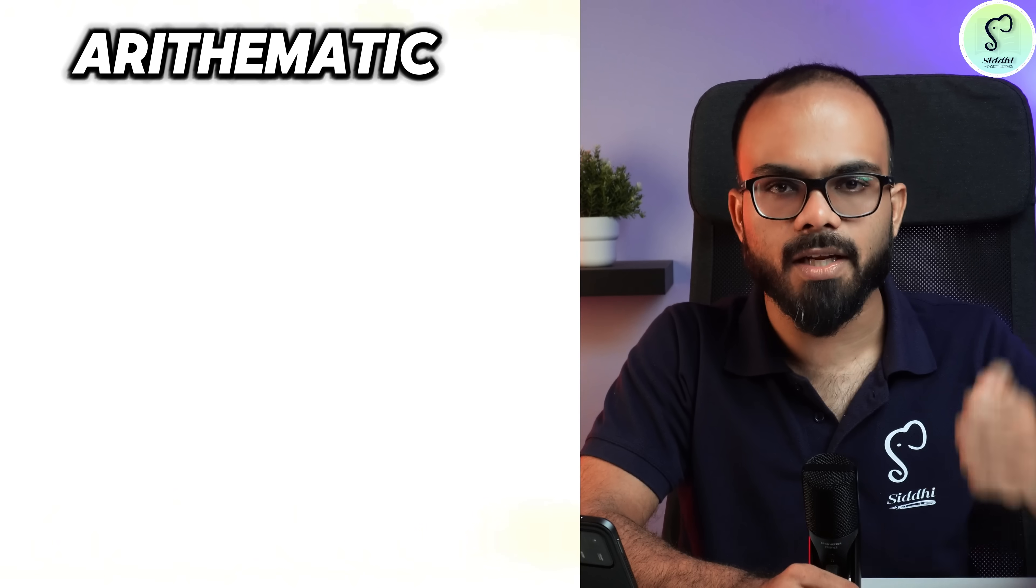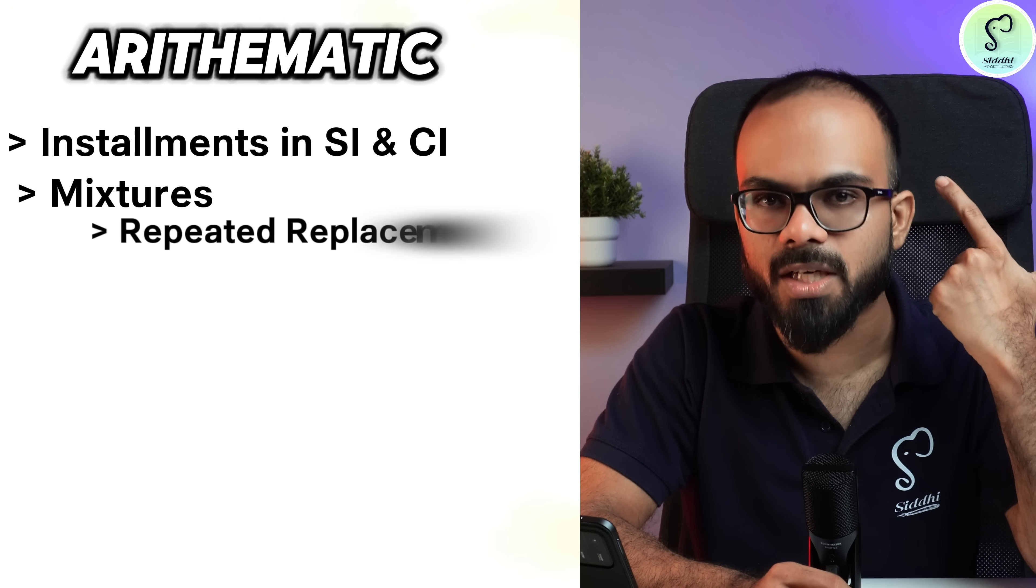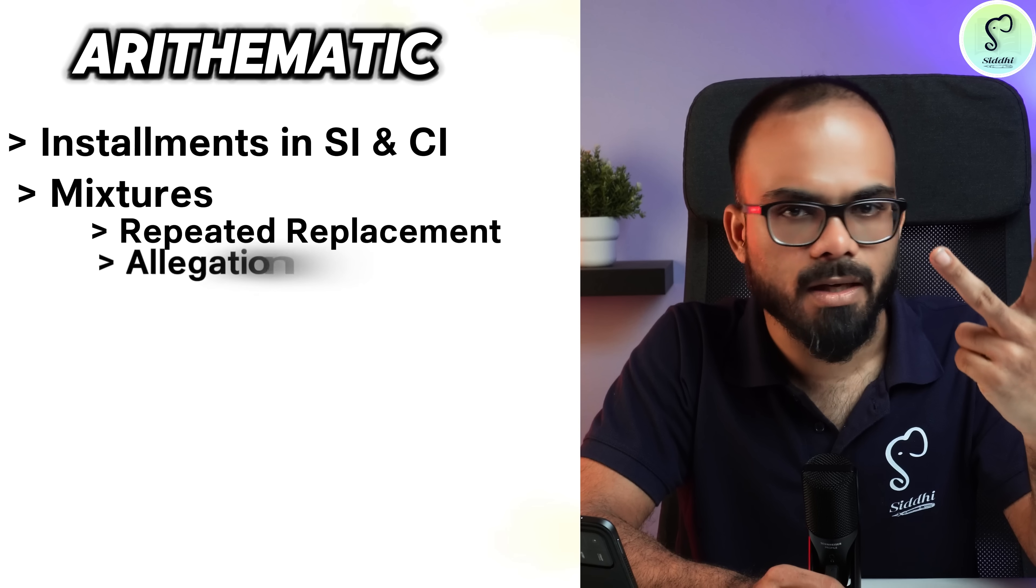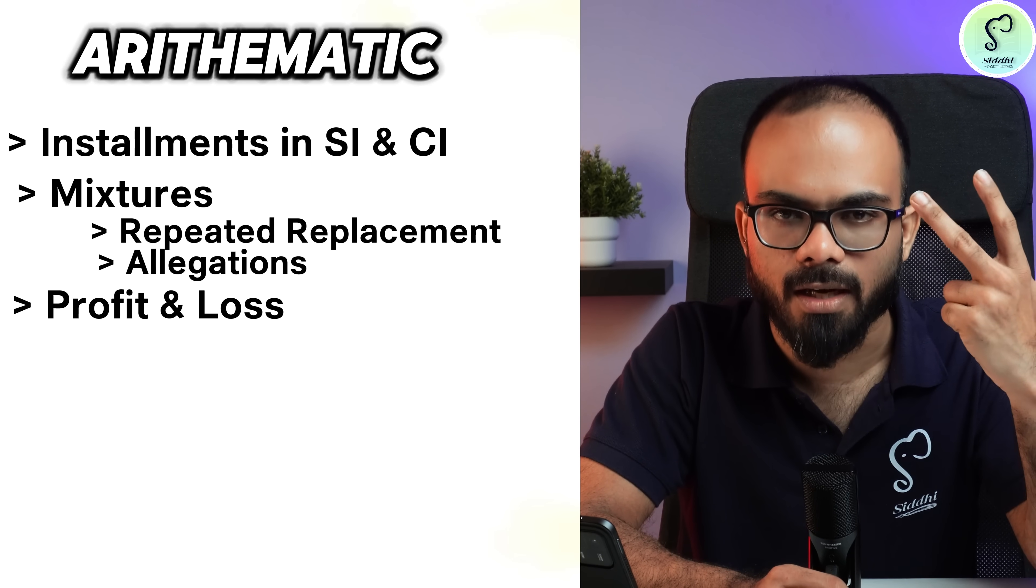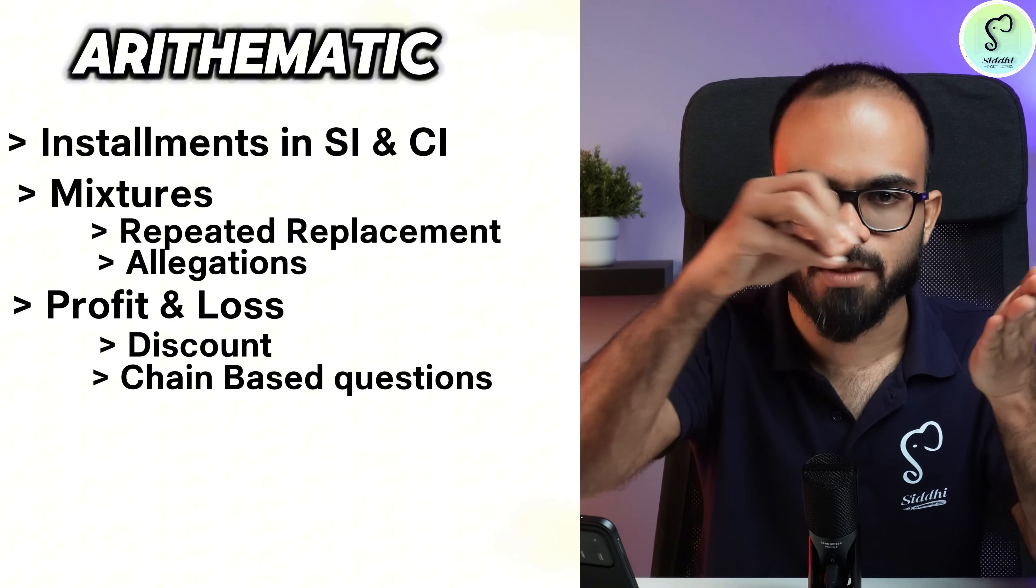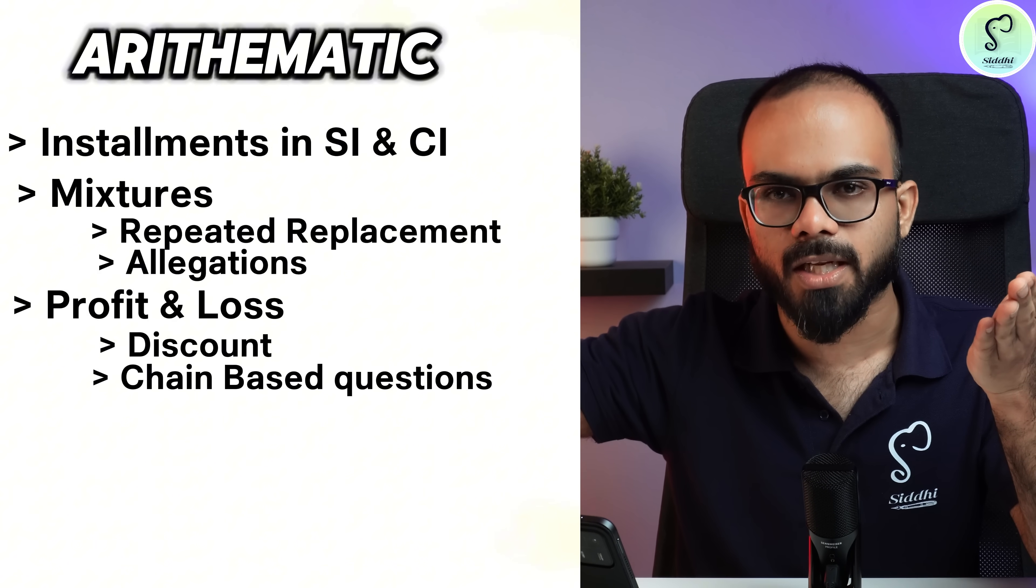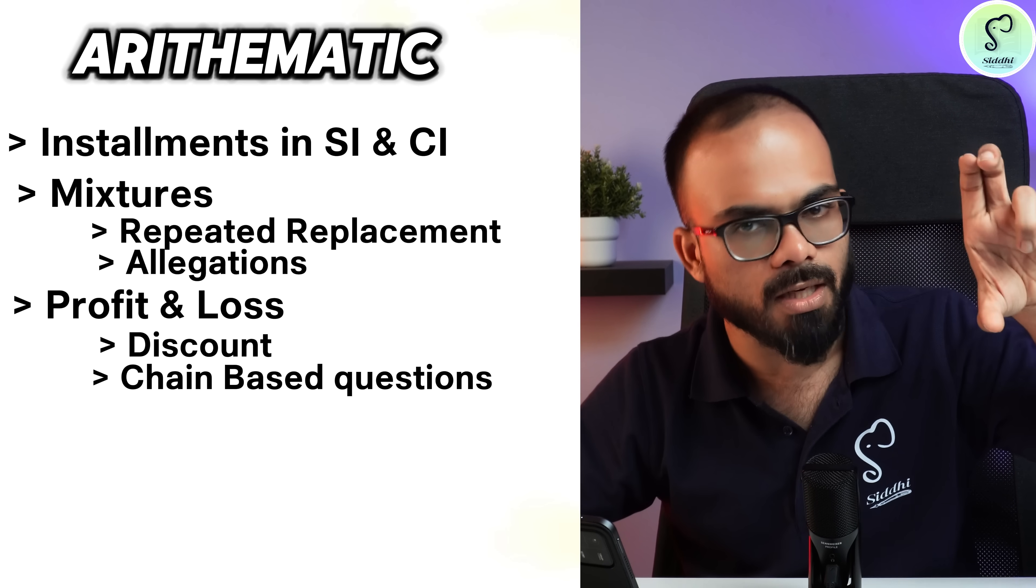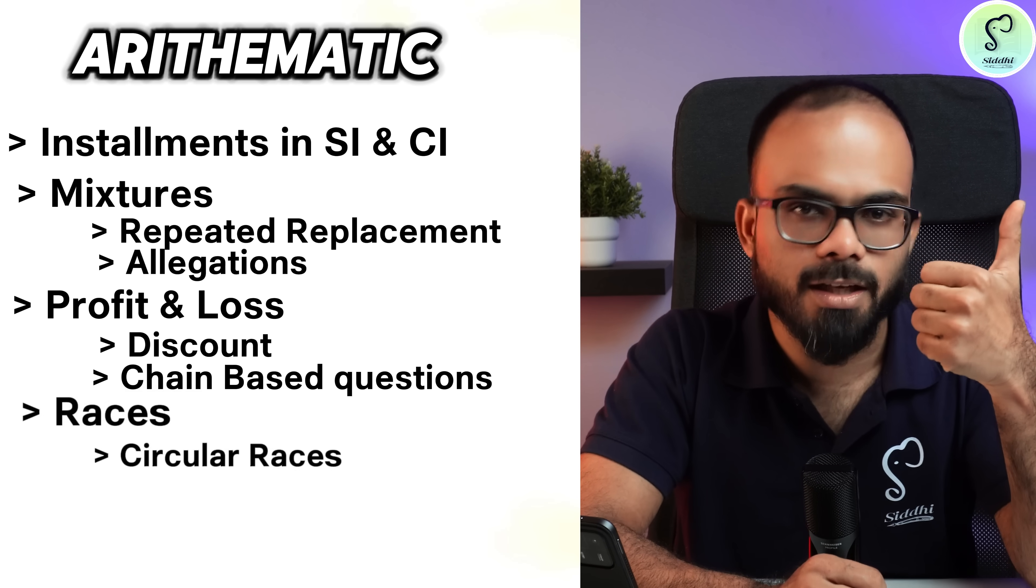Once this is completed, be good at arithmetic. In arithmetic, there are certain questions which are important. One is installments in simple and compound interest, then mixtures, in mixtures repeated replacement. Then allegations are necessary. In profit and loss and discount altogether, there are more questions on discount and chain-based profit and loss. That is, something is sold for X percentage profit, again sold for Y percentage profit. If the person is obtaining Z amount of rupees, what is the original amount? These kind of chain-based questions because they are calculative in nature.